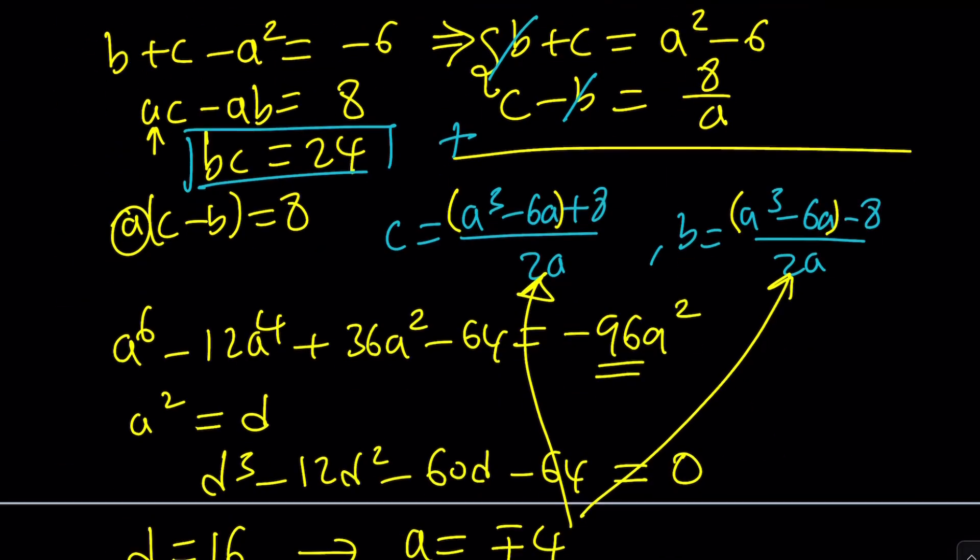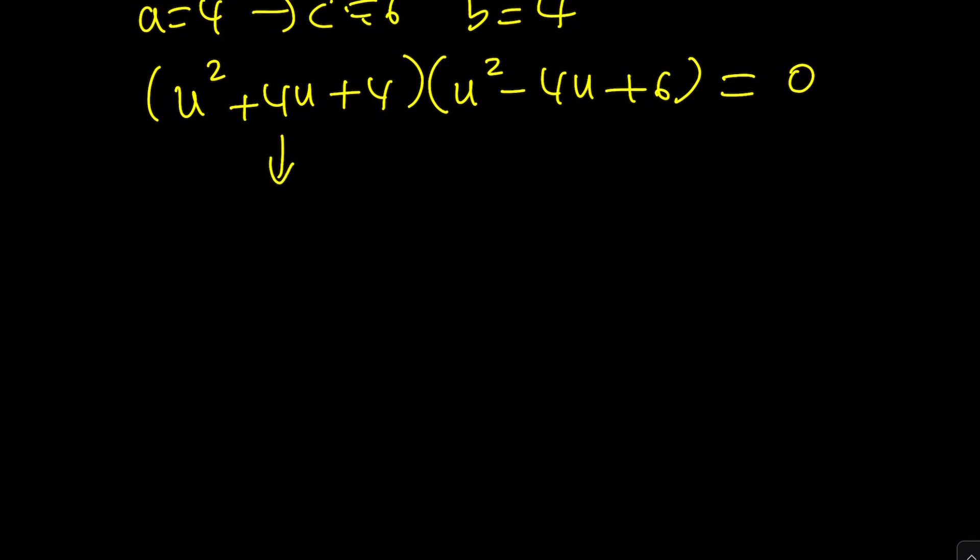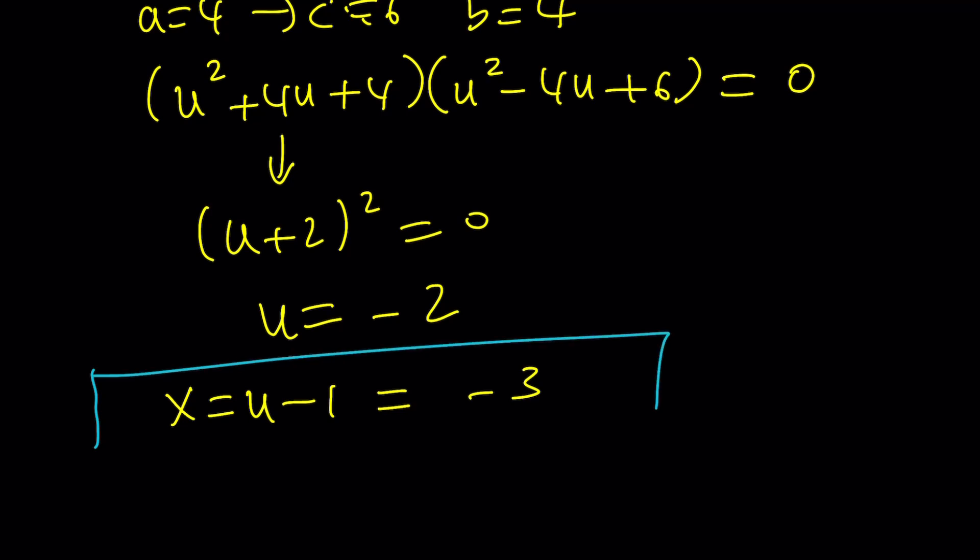Notice that from here we only get one real value because this is the only one. The other one is going to give us complex solutions, which is fine. You can go out and work them out. But this gives us u plus 2 squared equals 0, which implies that u is equal to negative 2. But what is u? Well, x is u minus 1, so we're just going to subtract 1 from this value to find the x value. So x must be negative 3, and that is the only real solution. How is that possible? Because we got a perfect square.